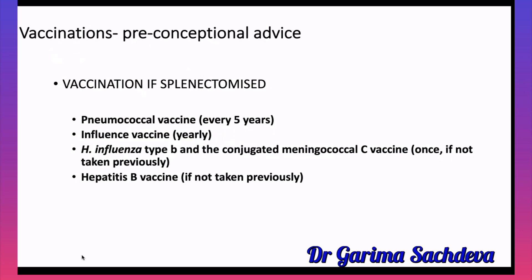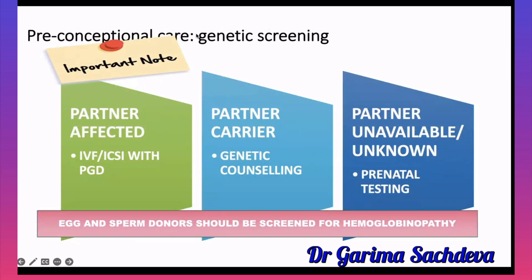To summarize: stop deferiprone and deferasirox, and bisphosphonates three months prior to pregnancy. Start folic acid 5 mg until three months of conception along with vaccines. If the patient is splenectomized, start penicillin prophylaxis, or erythromycin if allergic to penicillin.